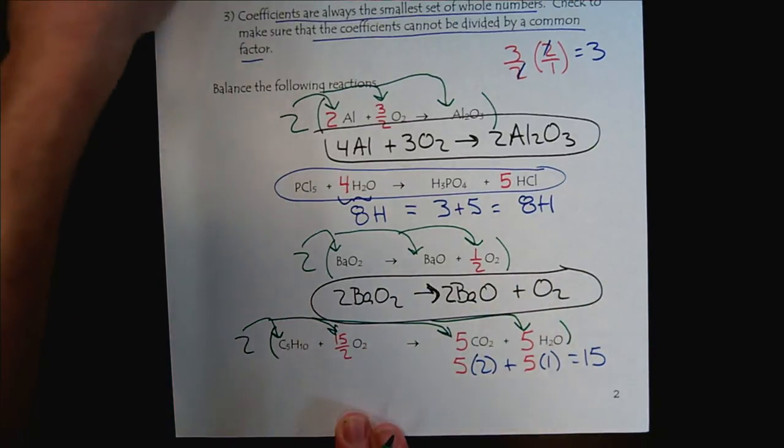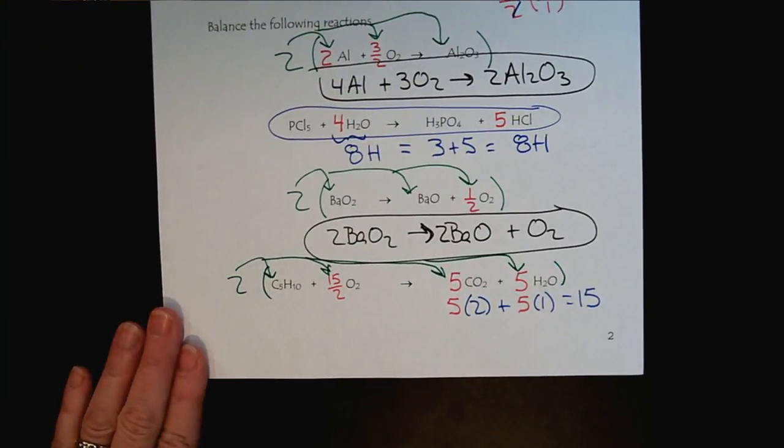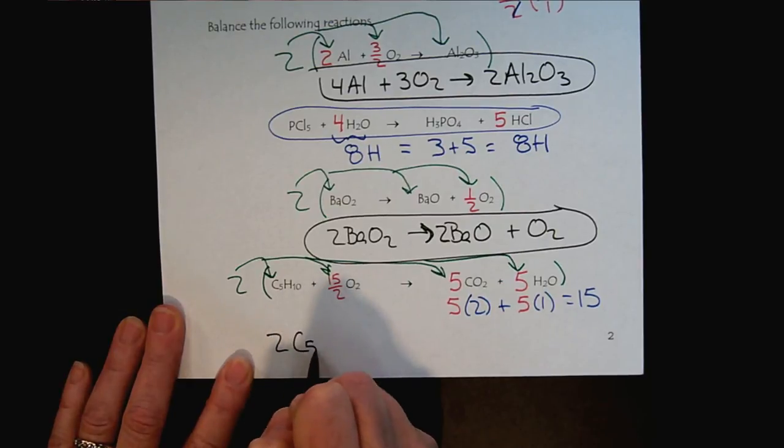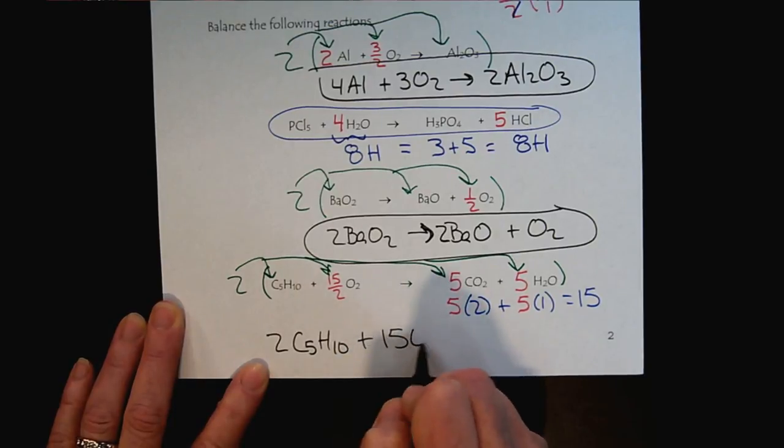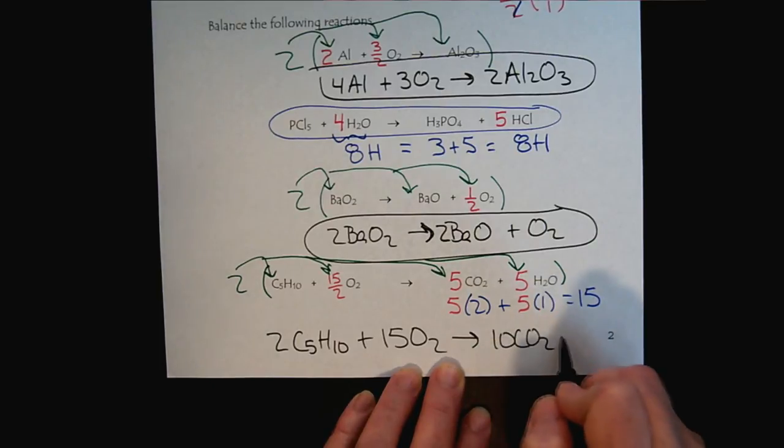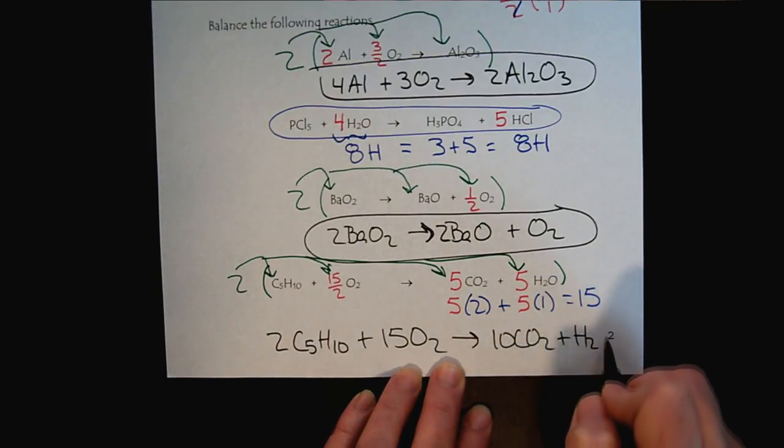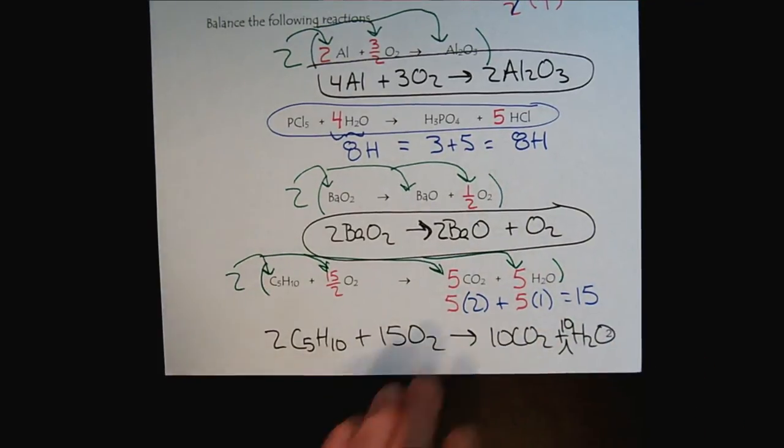I'll slide this up just a wee bit more and we'll put our final answer. Two of the hydrocarbons reacts with 15 oxygen to produce 10 CO2 and 10 waters. That concludes our video tutorial on balancing chemical reactions. This would be a great time to work a few more problems to reinforce your understanding.